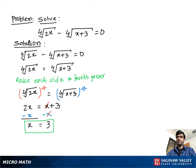Now let's check that x equal to 3 is the right solution for this problem. We write the problem one more time: fourth root of 2x minus fourth root of x plus 3 equals 0. Now we substitute the x value into this original equation.